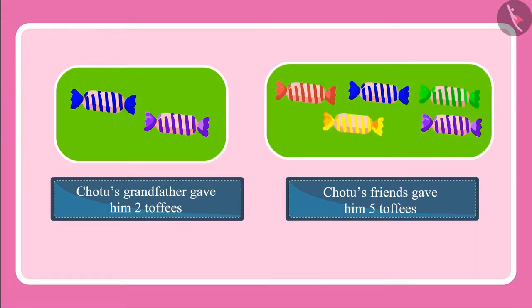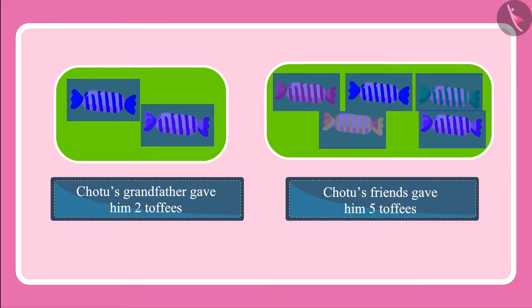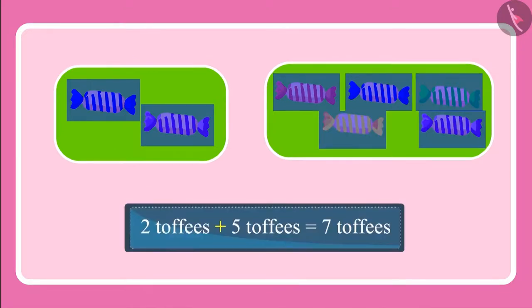Come children, let's count and see. One, two, three, four, five, six, seven. This means Chotu now has seven toffees with him.